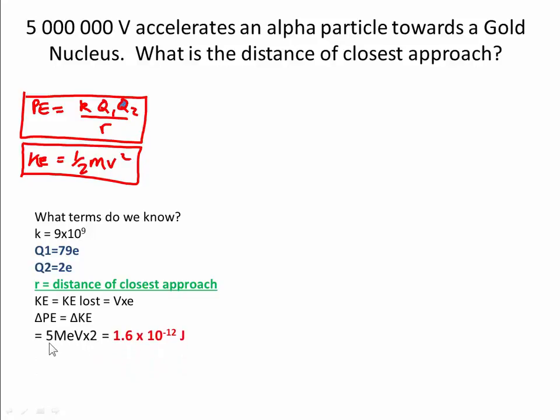So we have 5 million volts times by 2 times the electron charge because we have an alpha particle which is 2 plus, 2 fundamental charges. And we end up with an energy of 1.6 times 10 to the minus 12 joules.